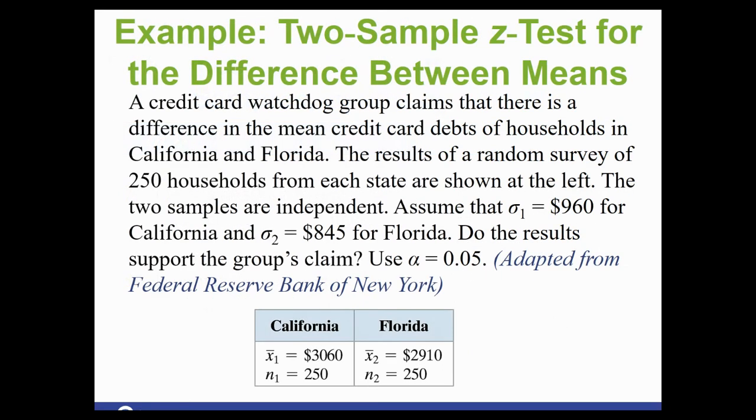All right, let's put it all together. Here's our example. A credit card watchdog group claims that there is a difference in the mean credit card debts of households in California and Florida. The results of a random survey of 250 households from each state are shown at the left. The two samples are independent. Assume the population standard deviation is 960 for California and 845 for Florida. Do the results support the group's claim? Use a level of significance of 0.05. And then you are also given a nice little chart that organizes the rest of the information you needed. Your sample means and your sample size.